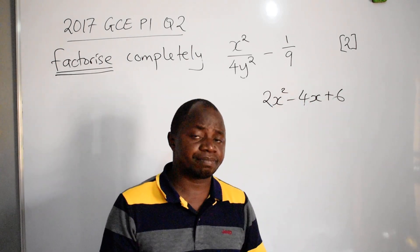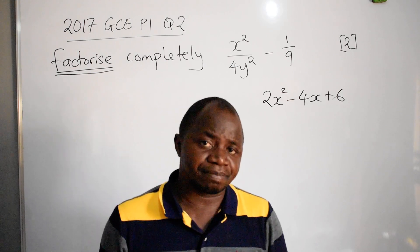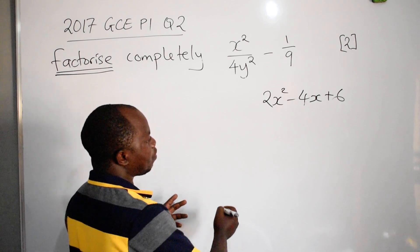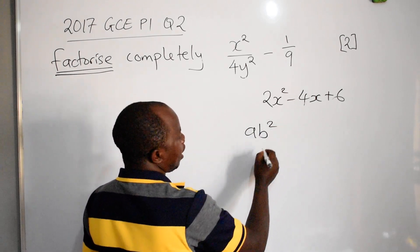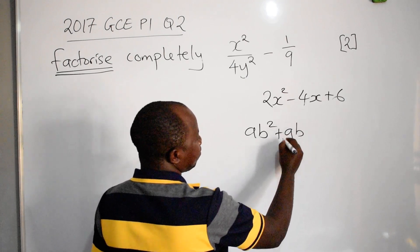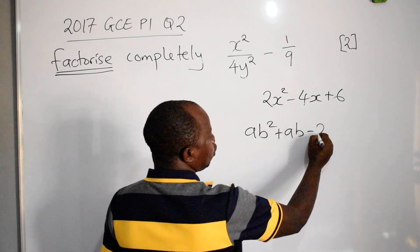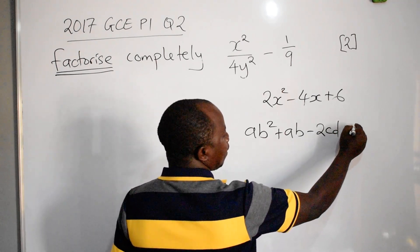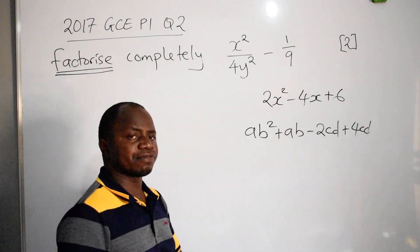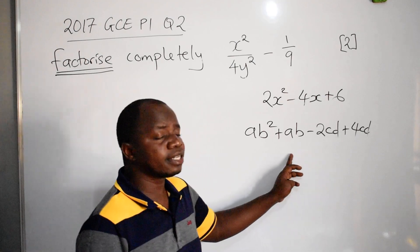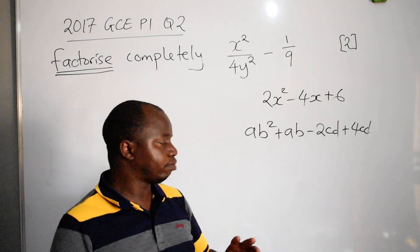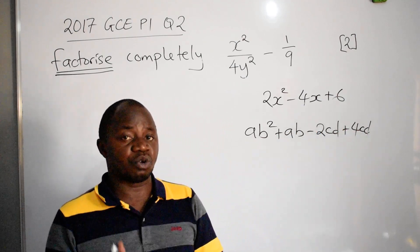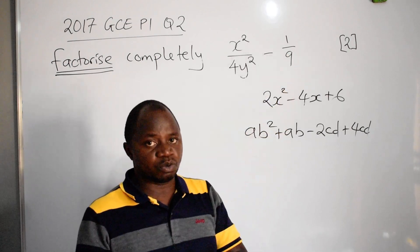Factorization by grouping has four terms. For example, ab squared plus ab minus 2cd plus 4cd — one, two, three, four terms. So to summarize: two terms is difference of two squares, three terms is quadratic factorization, four terms is factorization by grouping.